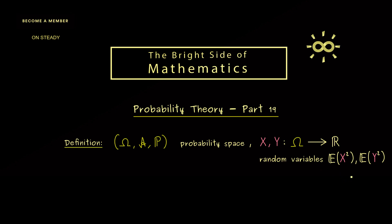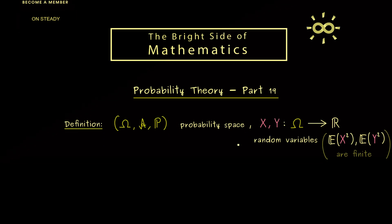And obviously, this is even a stronger assumption and we also want that for Y. So in short, these two integrals should exist, so they should be finite. And then, we are able to define the so-called covariance of X and Y.